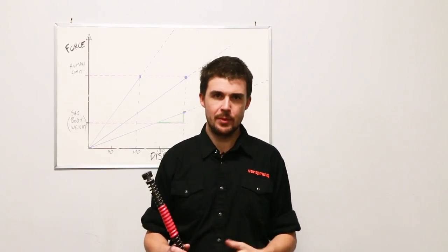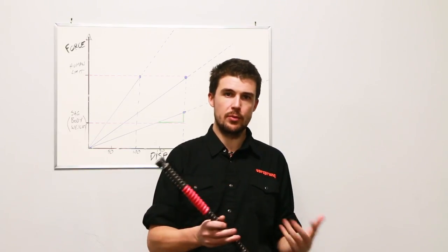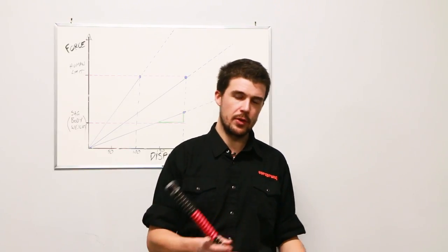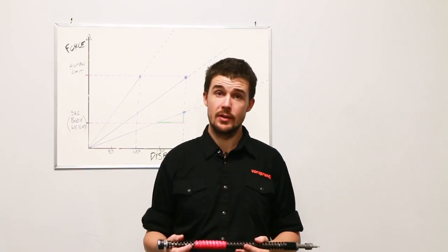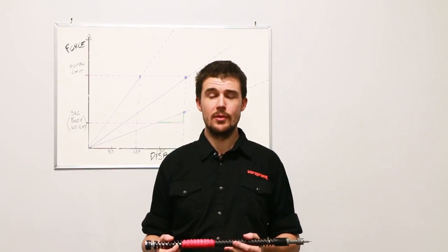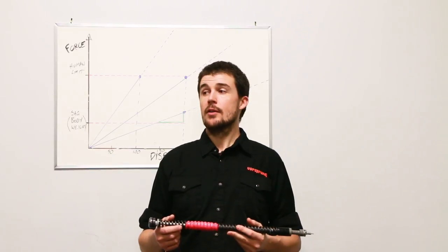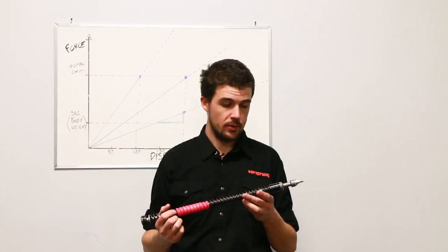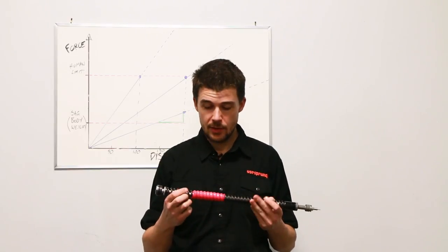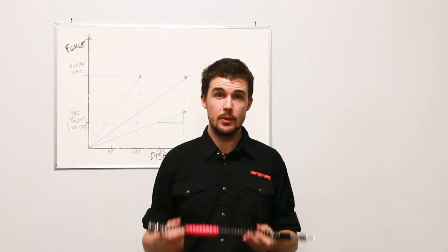For those who aren't brushed up on the history of this, basically coil springs were the first things that anyone used as a spring in mountain bike suspension. Actually they weren't the first thing. Elastomers were the first thing and they were absolutely useless. Fortunately, we graduated from that to springs that weren't colossal turds and never looked back. We went to air springs.